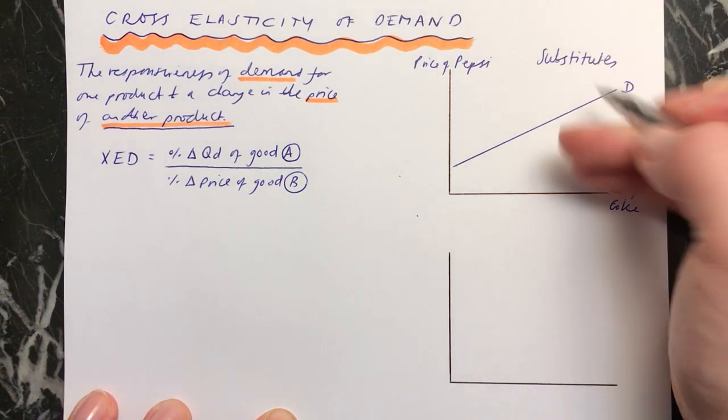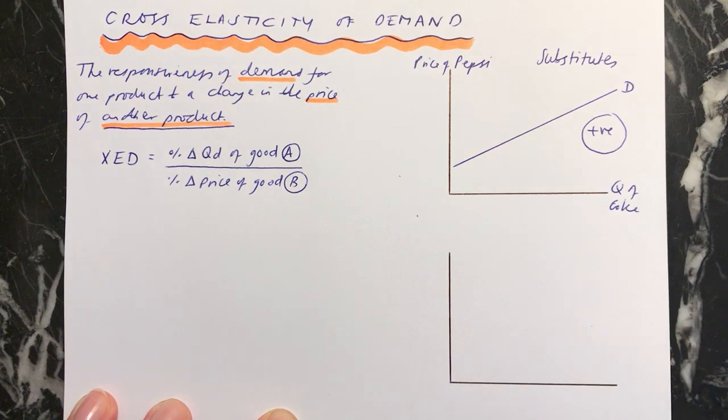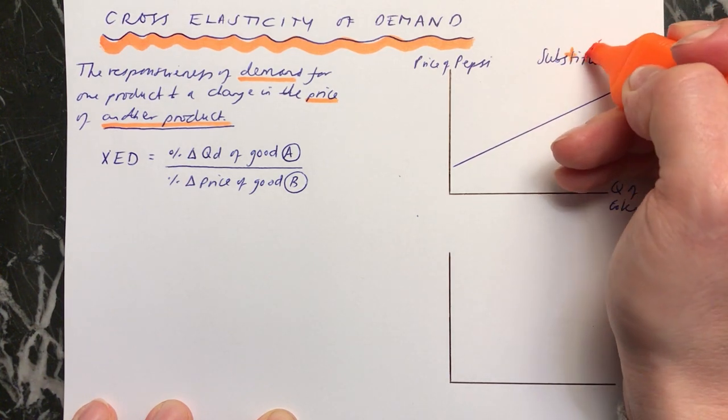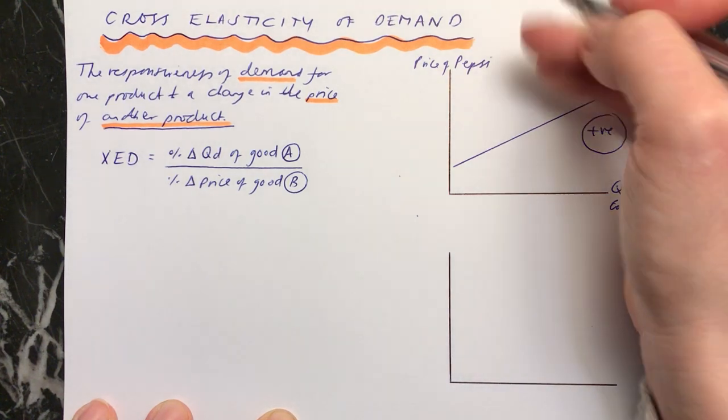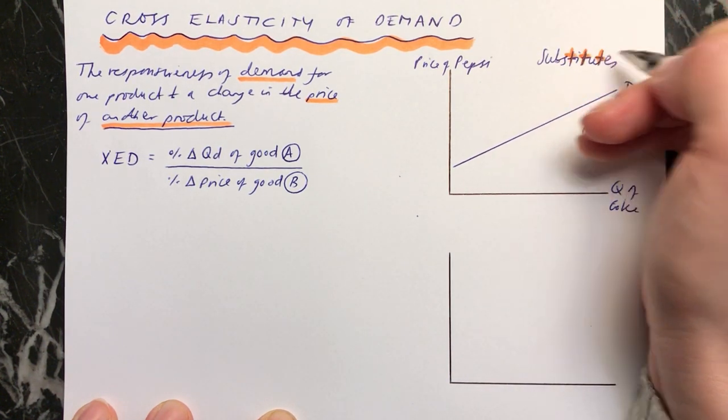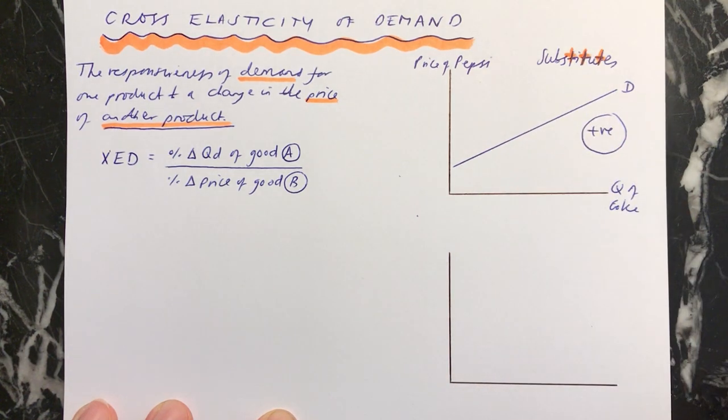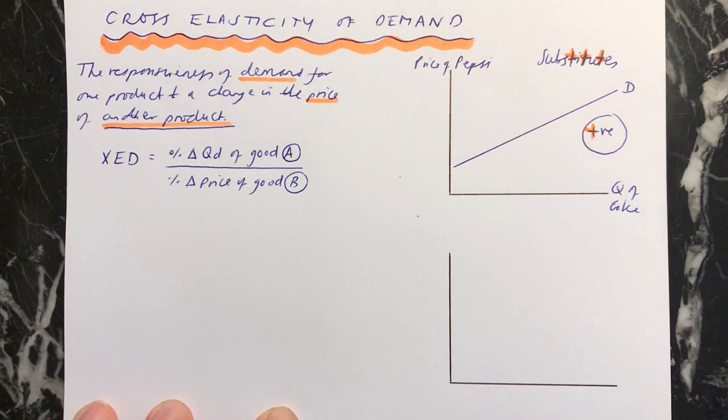We see this positive correlation, and the value for substitutes for XED will be positive. A good way to remember this is when you write the word substitute, there are lots of pluses in the word substitute. All of these pluses, with these T's, remind you that substitutes have a positive cross elasticity of demand.